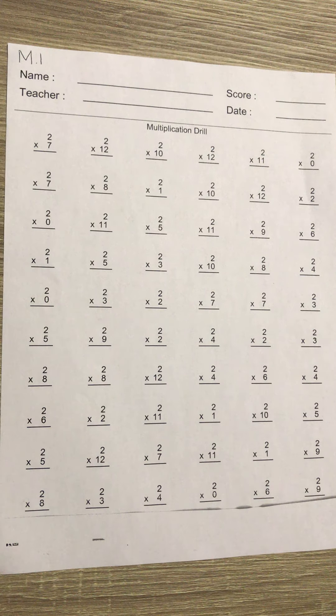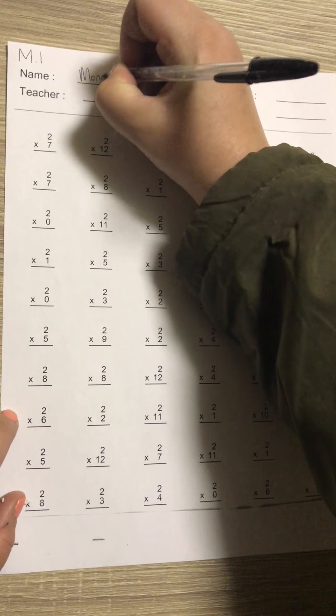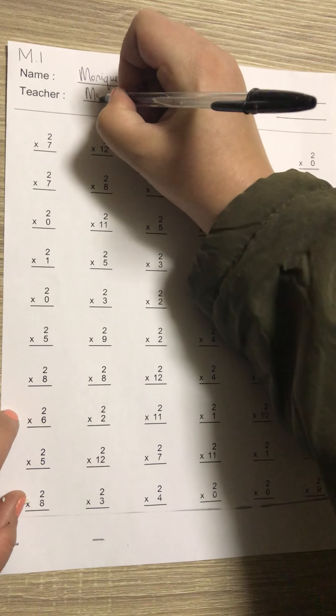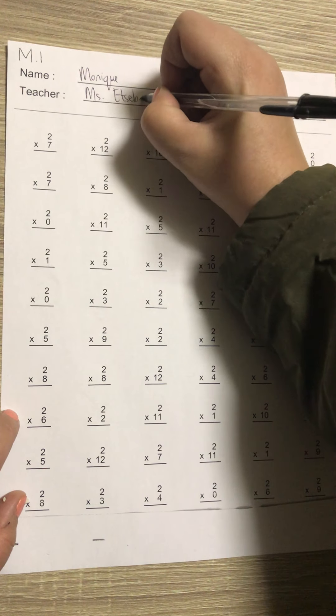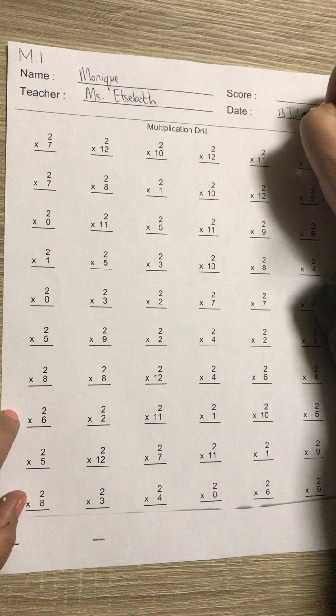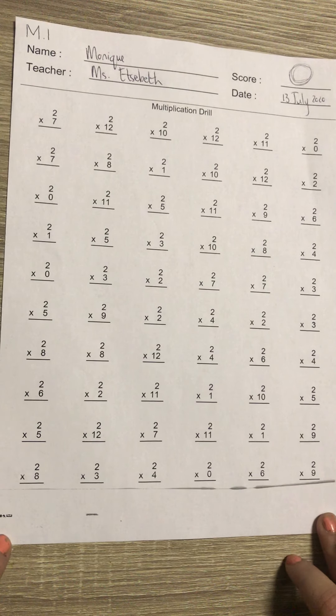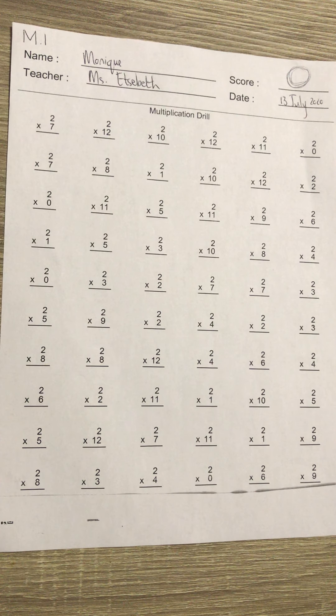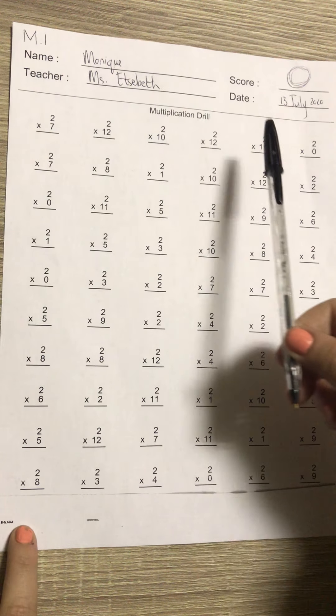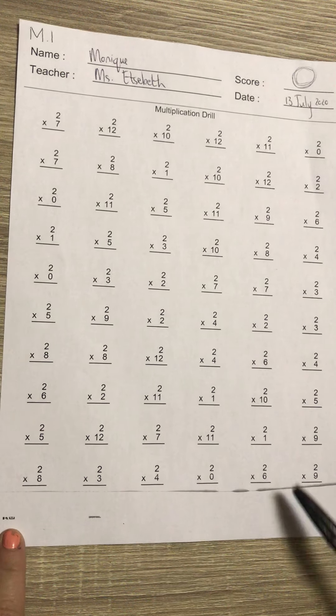You need to have page one in front of you and your gray pencil. First thing, you fill in the things at the top: name, teacher Miss Elizabeth, date. And this you don't fill in, I will fill it in once I've marked. As you can see on this page, I think I made it 65 problems.